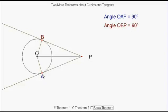In these cases, we've got two tangents touching at A and B. They're both drawn from the same point, P.